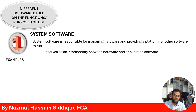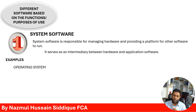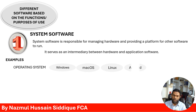Some examples of system software: first is the operating system. Examples include Windows, Mac OS, Linux, Android, and iOS.